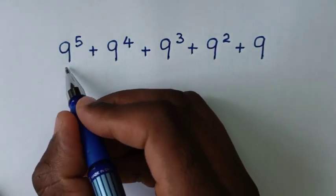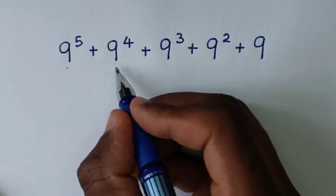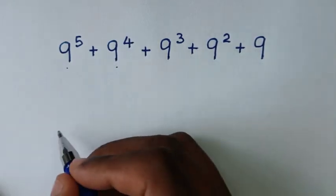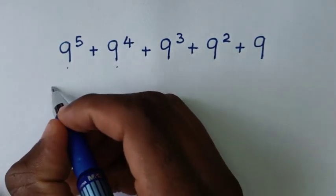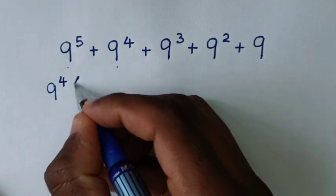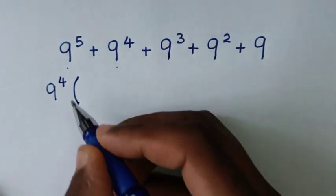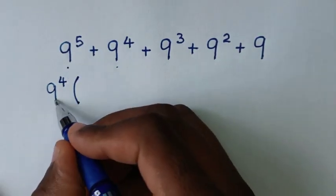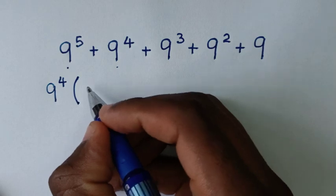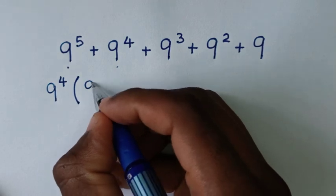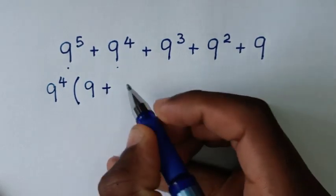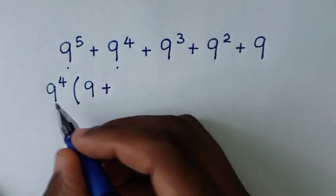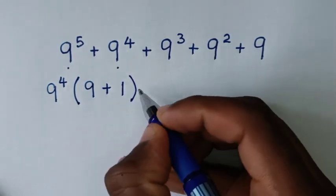From here, 9 power 5 plus 9 power 4 — 9 power 4 is common, so we will take 9 power 4 out of the bracket. Then 9 power 5 divided by 9 power 4 is 9 power 1, which is 9. Then plus 9 power 4 divided by 9 power 4, which is 1. Close bracket.